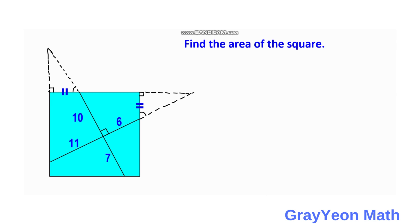Since this angle — if we call this theta — then we can say that this is also theta, because we just rotated these lines perpendicularly. This is a 90-degree angle, so the angle should be the same.